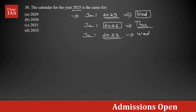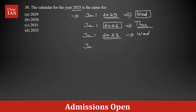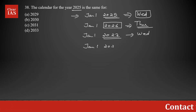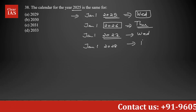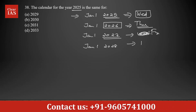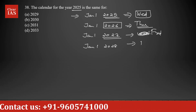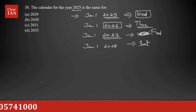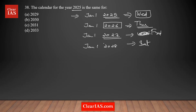2027 has 365 days — a normal year — so one odd day. Jan 1st 2028 is going to be Friday — sorry, that's my mistake — Jan 1st 2028 is going to be Saturday. So we are getting close to the answer options.